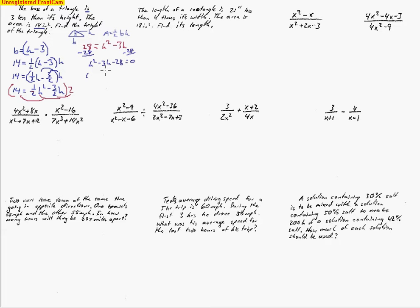Factoring gives us (h minus 7)(h plus 4). Setting each factor equal to zero gives two answers: 7 and negative 4. Since we're dealing with distance, we go with the positive one, so h equals 7. That means the height is 7 inches.